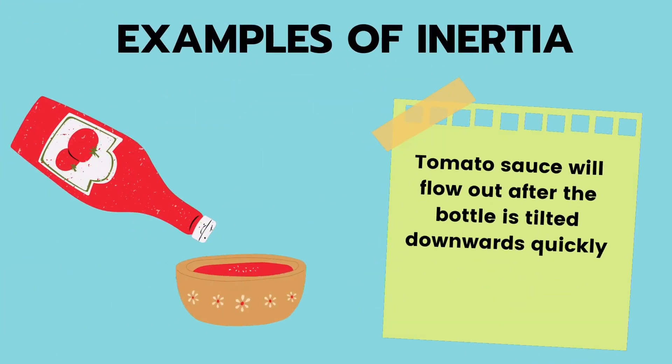Another example of inertia in our daily life is a ketchup bottle. Usually when the sauce inside is almost empty, we would give the bottle a quick jerk that would force the sauce out, and this is possible due to inertia. When the bottle moves, the sauce inside moves together. Then when the bottle suddenly stops, the inertia of the sauce retains its initial velocity and keeps the sauce moving downwards and out of the bottle.